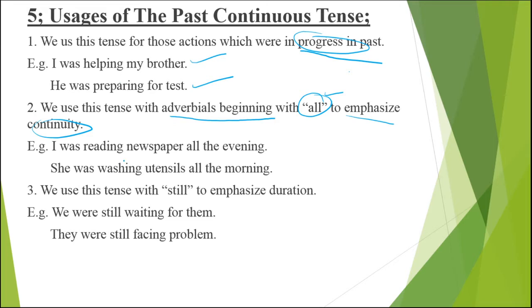For example: 'I was reading the newspaper.' This action was continued in the past for all the time — all evening — meaning there was no gap and that action was continued continuously. Similarly: 'She was washing utensils all the morning,' meaning from when the morning started until the end of the morning she was washing the utensils.